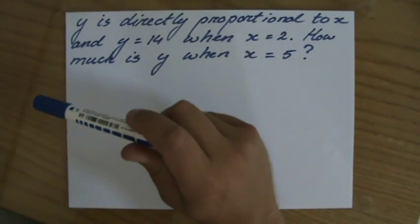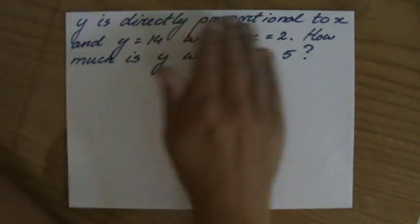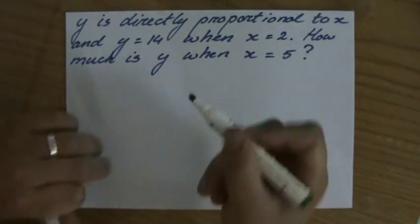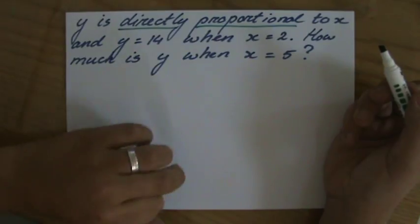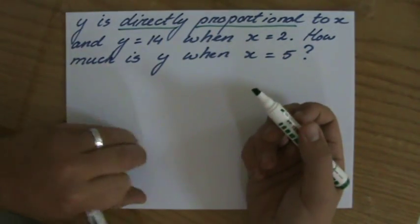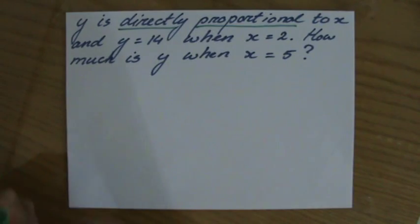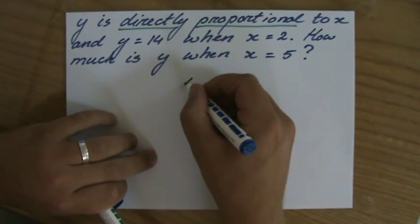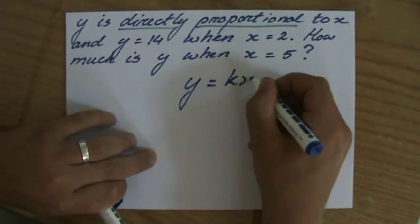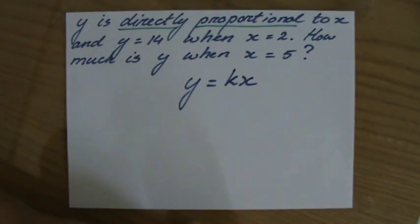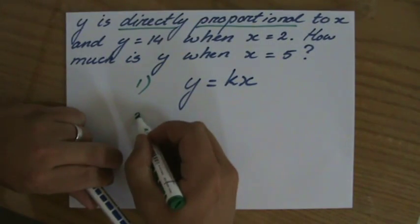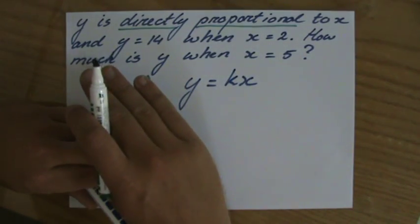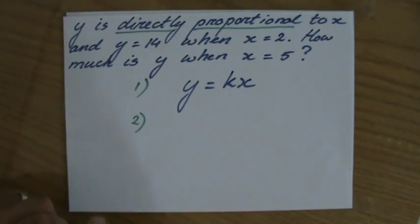Y is directly proportional to x, so that is important. We also have inverse proportion, but that's something for later. This is direct proportion. I already know that the formula is y equals kx. Let me write it down. That's my first step.